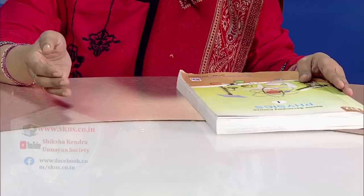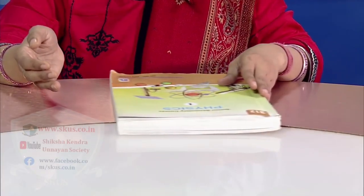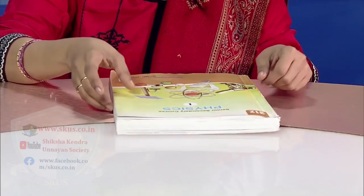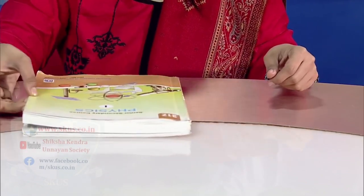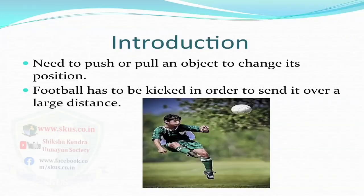Dear learners, today we will discuss a chapter on laws of motion. In the previous lesson, we have learned to describe the motion of an object in terms of its displacement, velocity and acceleration. But an important question is: what makes an object to move, or what causes a ball rolling to come to a stop? From our everyday experience, we know that we need to push or pull an object to change its position.